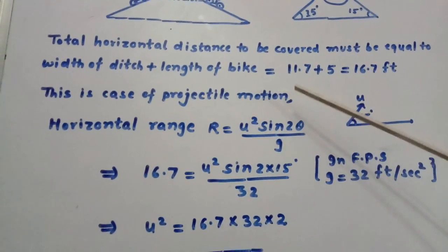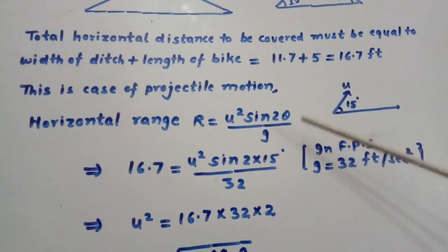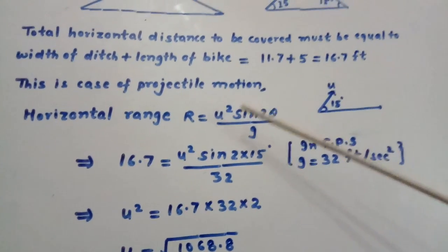This is a case of projectile motion. We apply the formula for horizontal range, which is given by U squared sine 2θ divided by g. Here we have to find U.